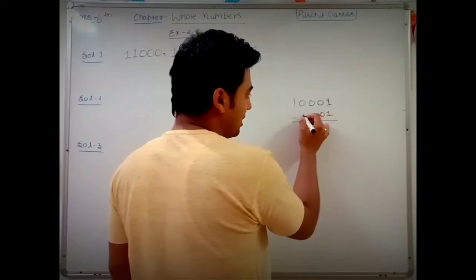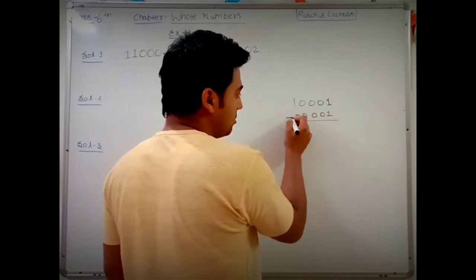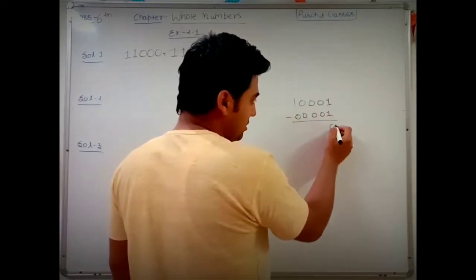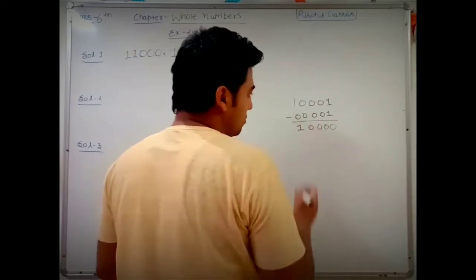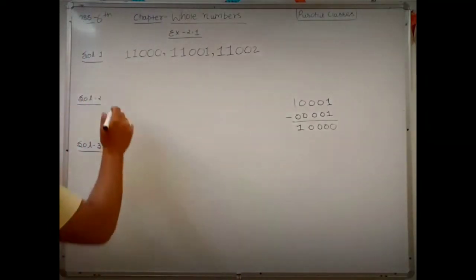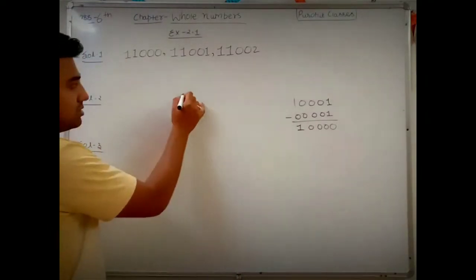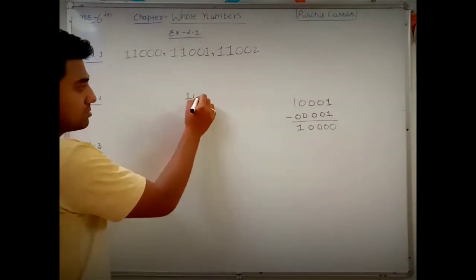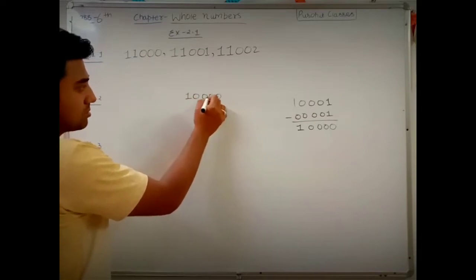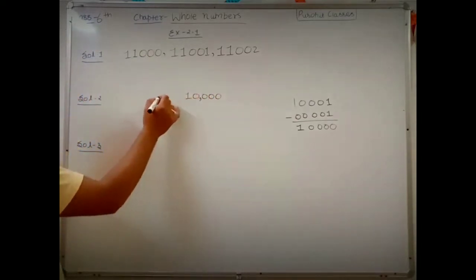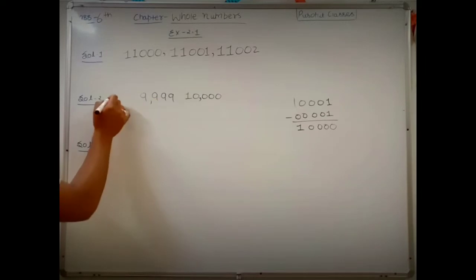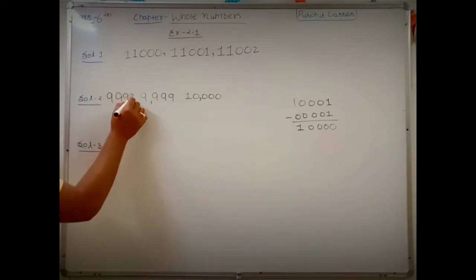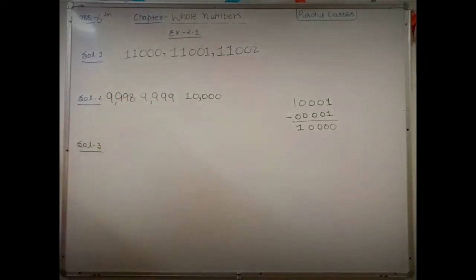Subtracting 1 from 100001: writing it as 1 0 0 0 0 1 minus 1 gives 100000. So just before 100001 is 100000, then 99999, and one more is 99998. You can also do this orally if you know the counting.